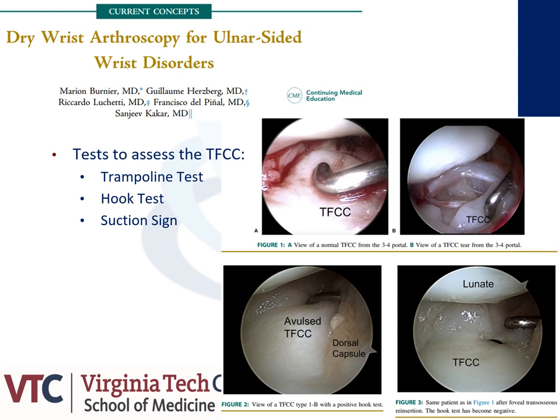Finally, the suction sign was developed and discussed by Drs. Green and Kakar, and is helpful in identifying Palmer peripheral 1B tears that are scarred in and unable to be assessed utilizing the hook test. The suction sign can also be utilized to verify successful repair of peripheral TFCC tears. It is performed by applying suction with a shaver on the TFCC; if the sign is positive, the TFCC will lift up toward the suction tip.